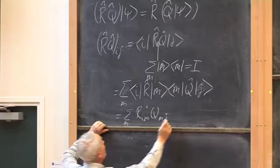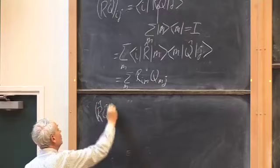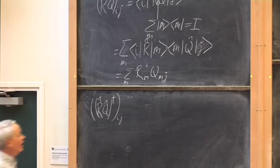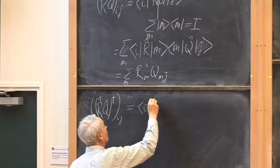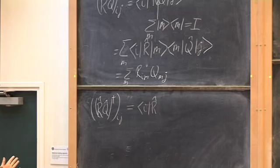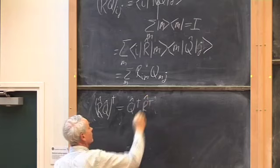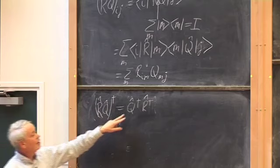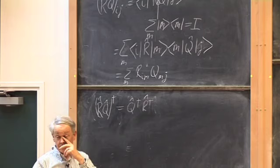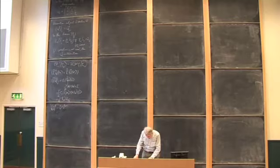We will also want to know the Hermitian adjoint of a product of operators. The result is that (RQ)-dagger equals Q-dagger times R-dagger. When you take the Hermitian adjoint of a product of operators, you reverse the order and dagger the individual pieces. You should find the demonstration in the book if you don't recall it from earlier lectures.